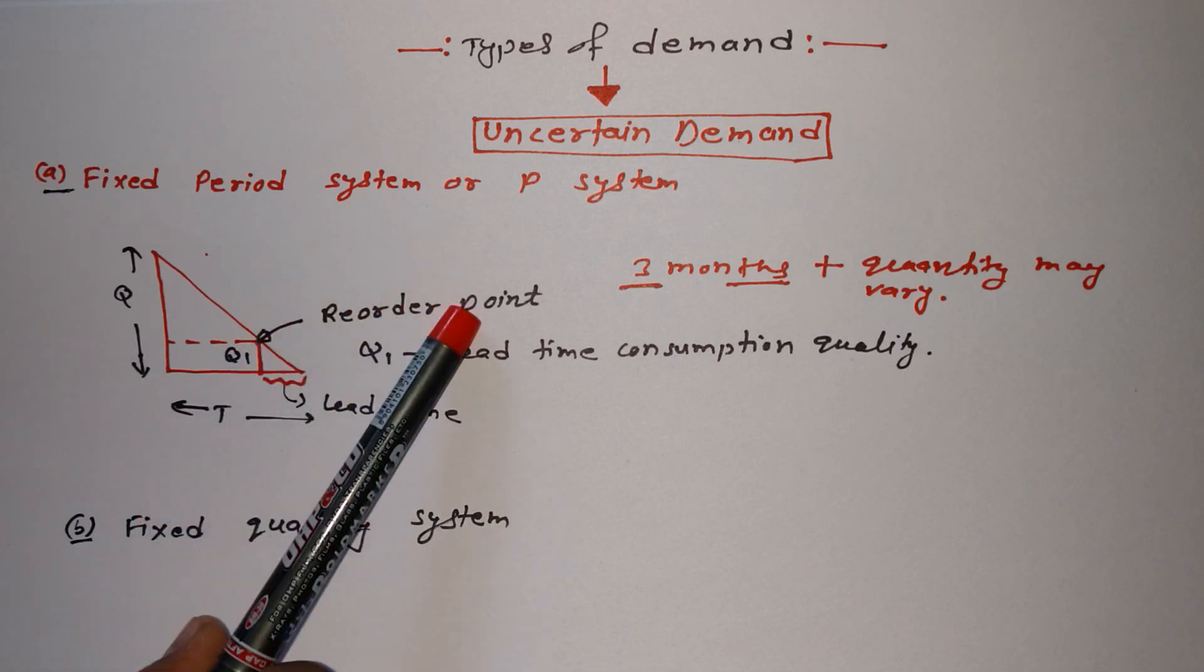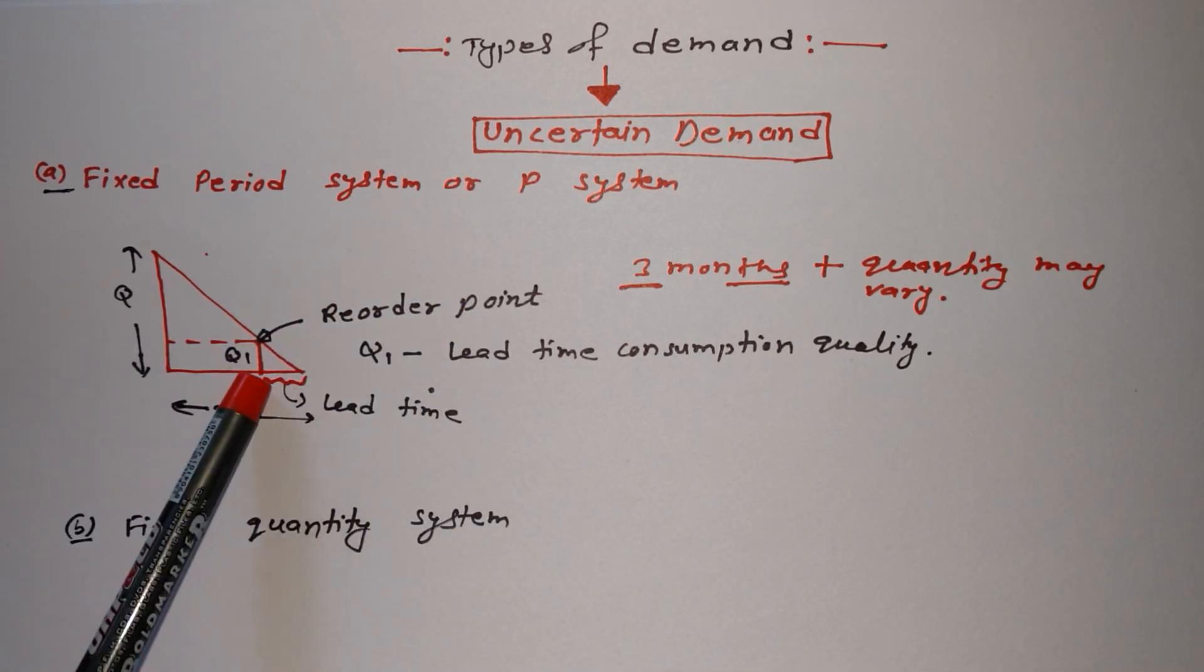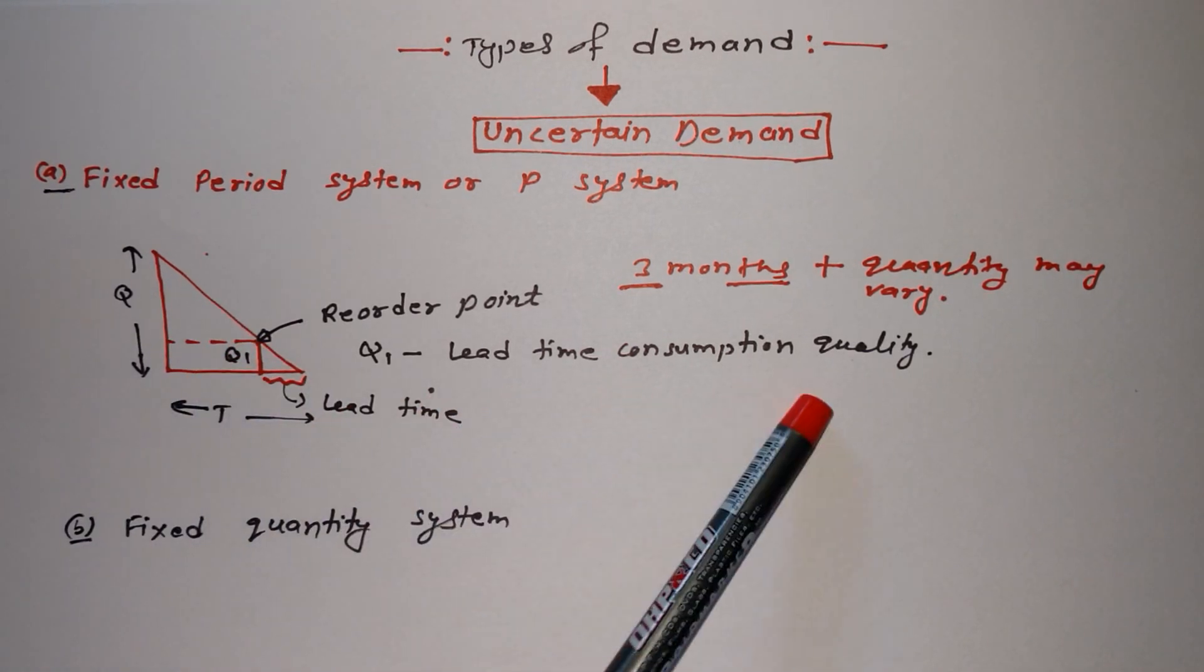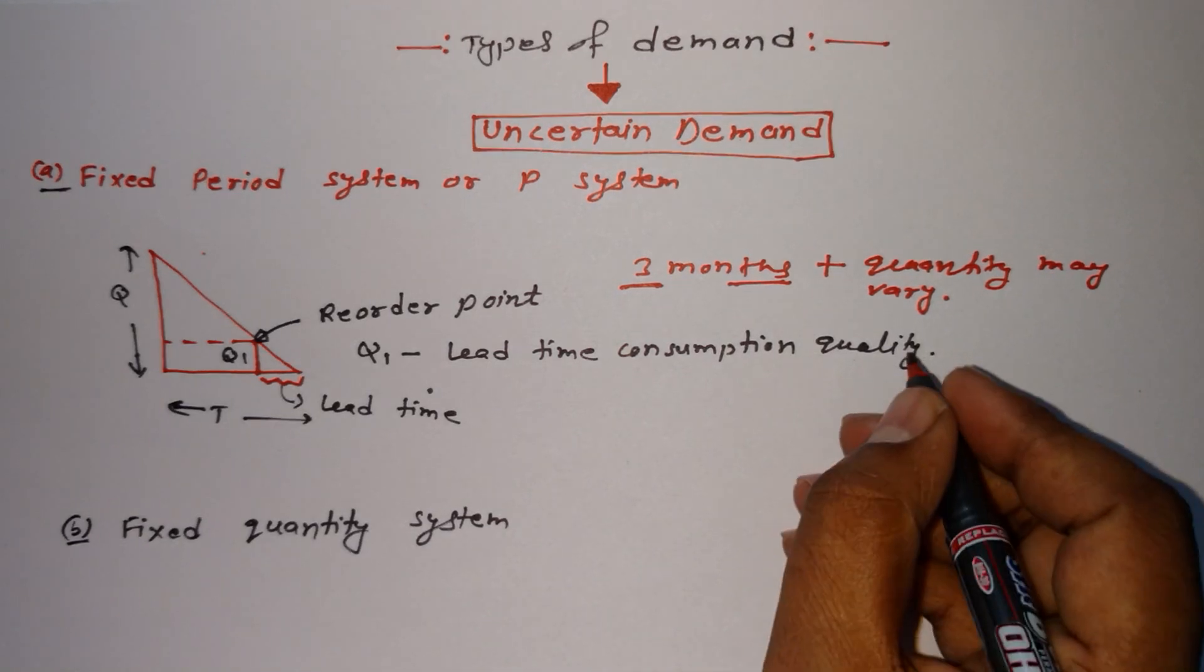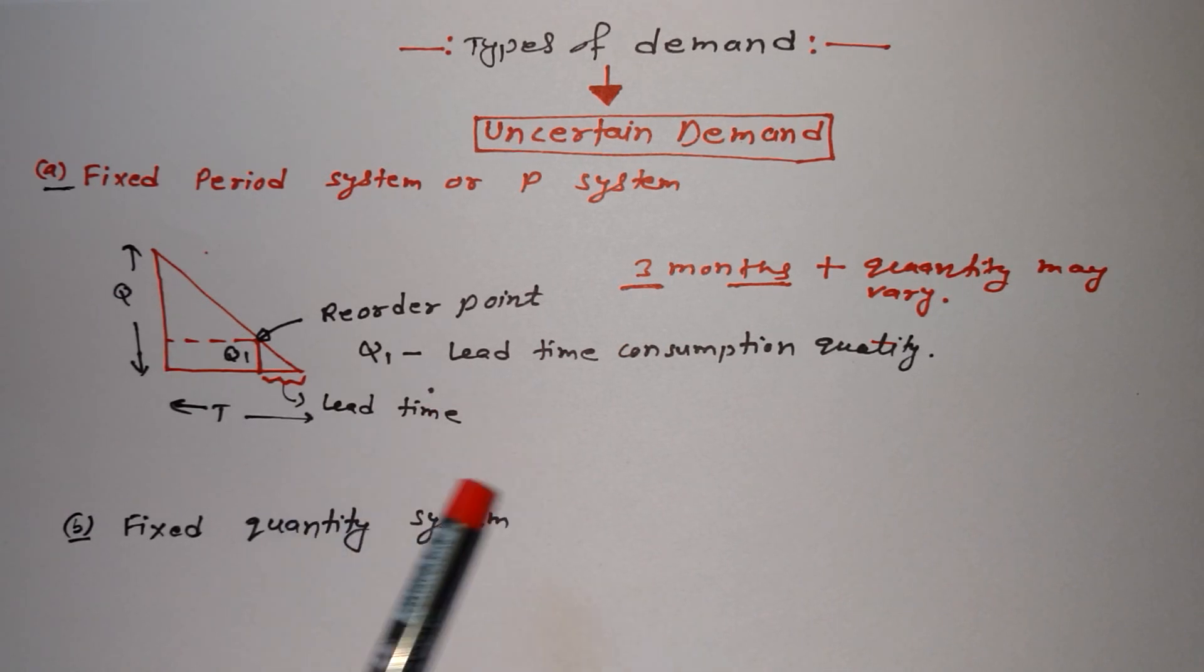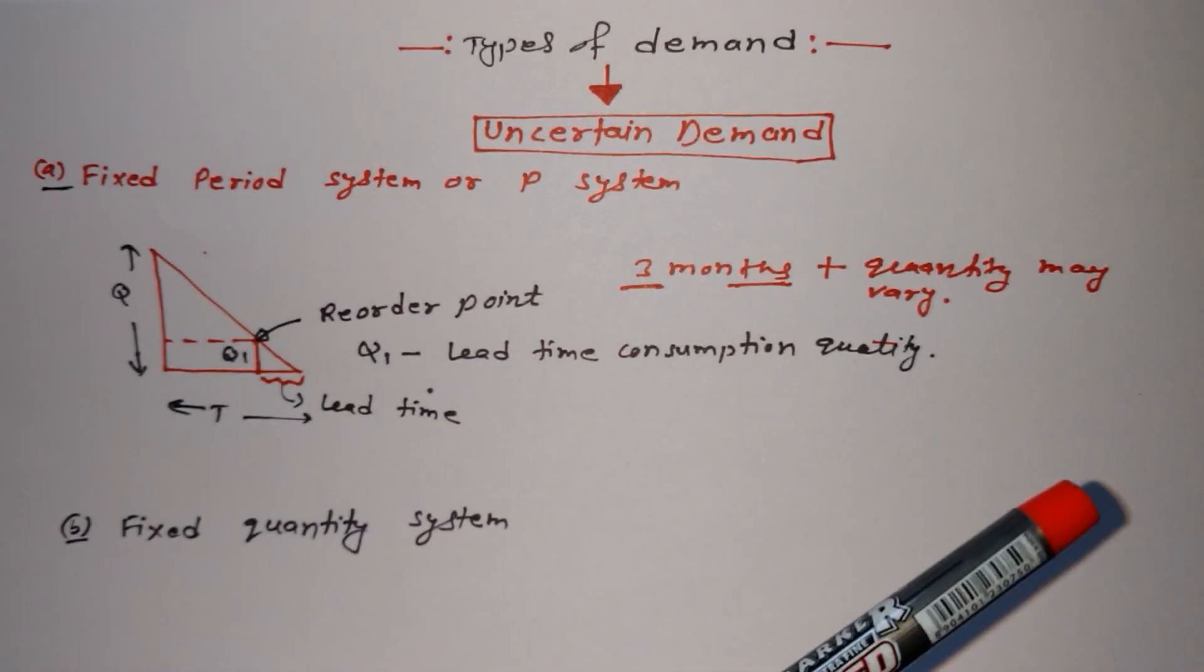This point is the reorder point, and from here to here is lead time. If we draw this vertical line that is Q1, that is known as lead time consumption quantity. So at that time, how much quantity will be consumed.